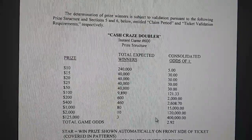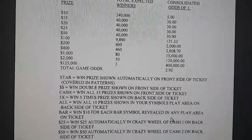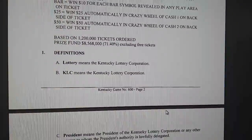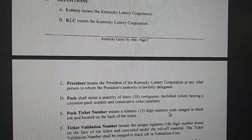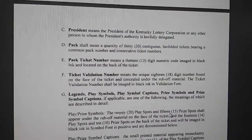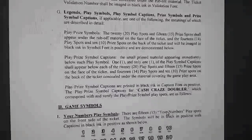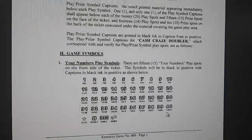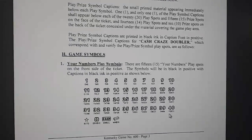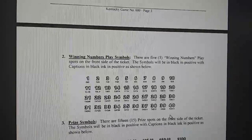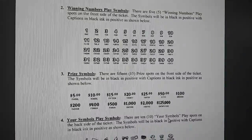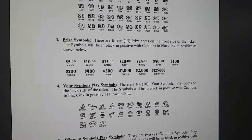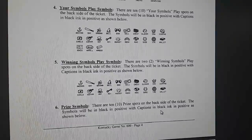And to win the top prizes, it's one in 400,000. And then this here tells you what all the symbols mean, and it gives you definitions of what each one means. And then you get down here to game symbols — it tells you exactly what the numbers look like, the symbols and everything, the winning numbers and the prizes under each. And then this is for the back of it, what the symbols look like.